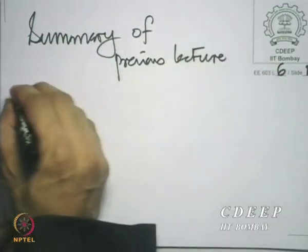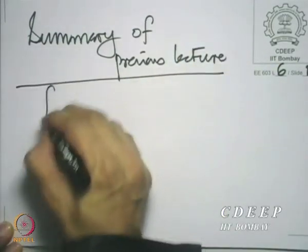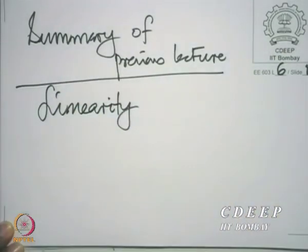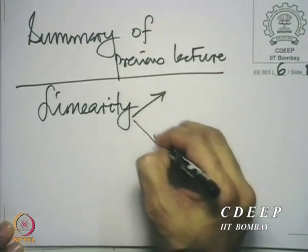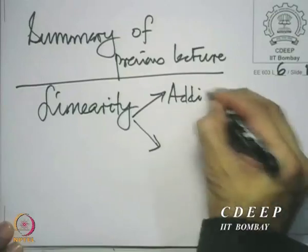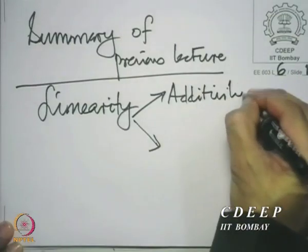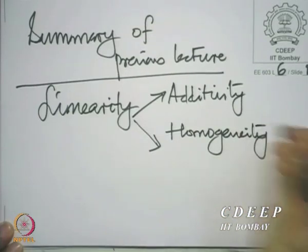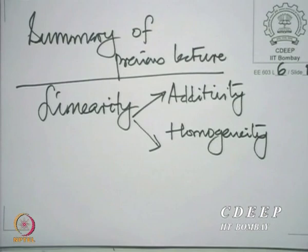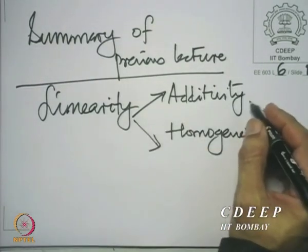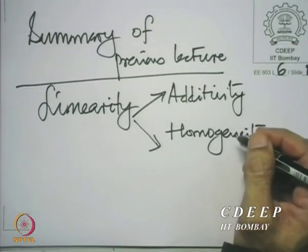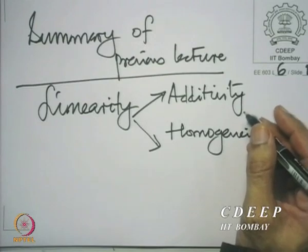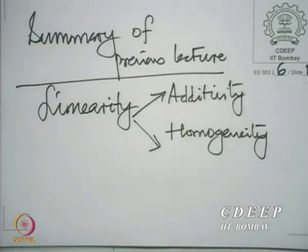In the previous lecture, we had essentially looked at linearity and shift invariance. We had seen that linearity comprises two properties: additivity and homogeneity. We had defined additivity and homogeneity by using special cases of linearity — as properties which were subsets of the properties of linearity.